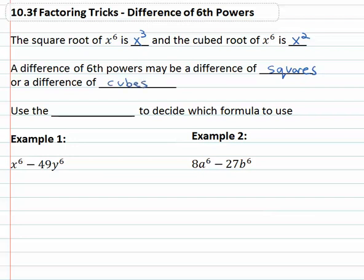We need to take a moment to decide which it is so that we can employ the correct formula. To decide we will use the numbers. If we can take the square roots of the numbers then we'll use the difference of squares. If we can do the cube roots of the numbers then we will do the difference of cubes — so it's very important to keep track of which one we're working with.